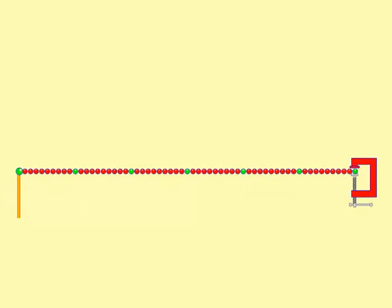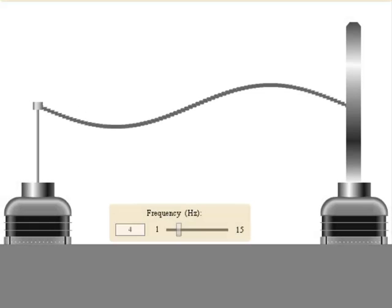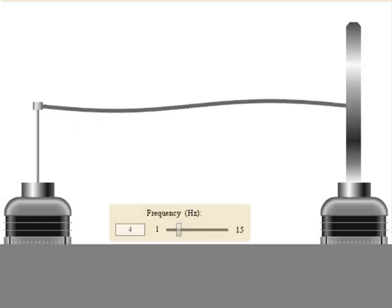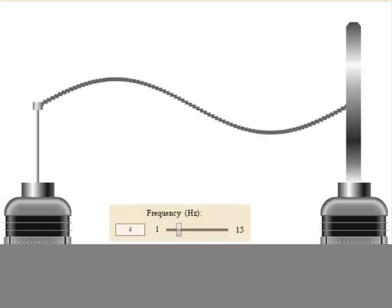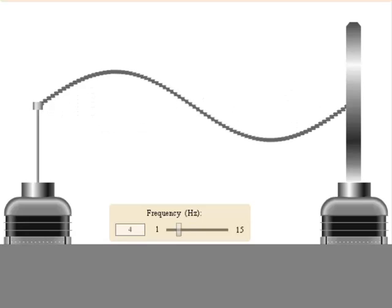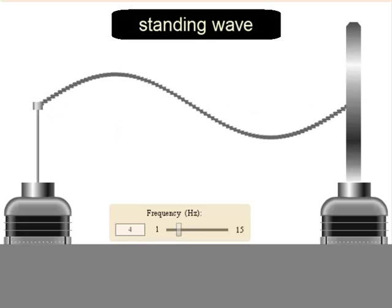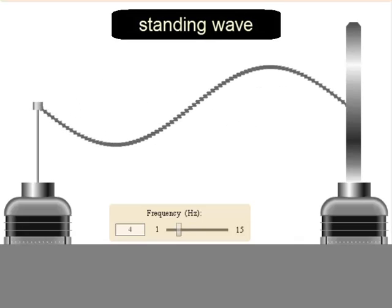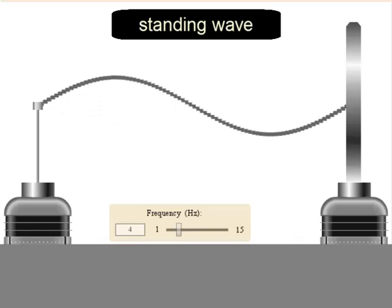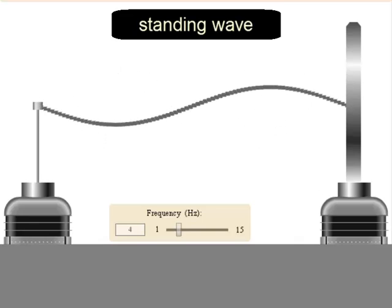If you make a wave by shaking a rope that's fixed on one end, the wave reflects back to you. By shaking the rope at just the right frequency, you can cause the outgoing wave and the incoming wave to form a standing wave. A standing wave is a wave that appears to stay in one place and doesn't seem to move through the medium.